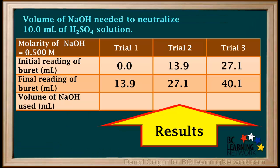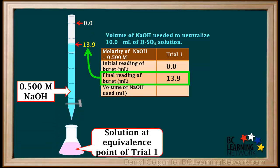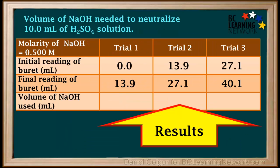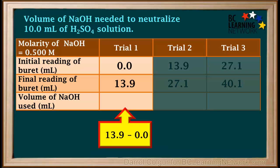Here's a table showing the results of this titration. The initial reading of the burette is the level of the NaOH in the burette before the titration is performed. In Trial 1, the NaOH starts out at the 0 milliliters mark. The final reading is the level of NaOH when the equivalence point is reached — in Trial 1, this is the 13.9 milliliter mark. The volume of NaOH used is calculated by subtracting the initial from the final reading: 13.9 minus 0 equals 13.9 milliliters.